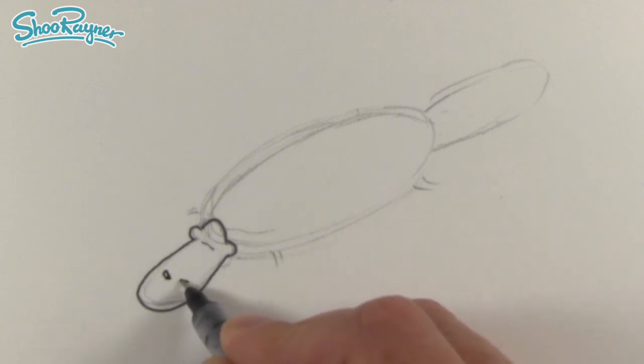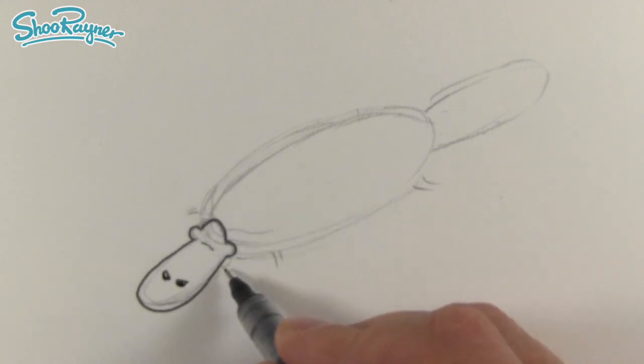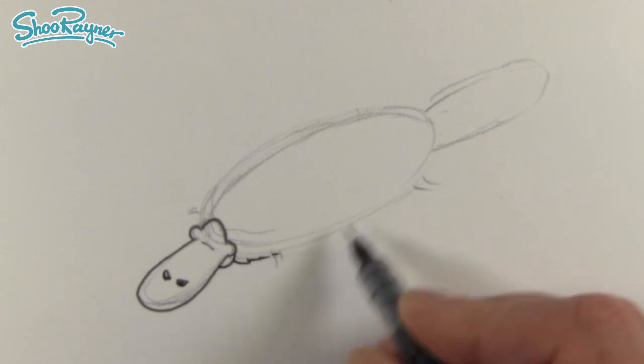Then it has these quite large kind of nostrils going on there and then kind of a lower bit of the bill. Then we can make this kind of slightly furry.